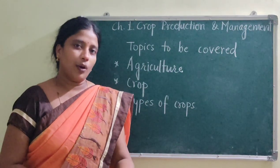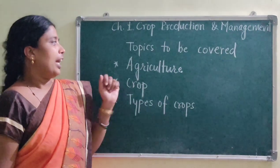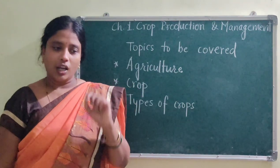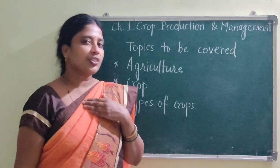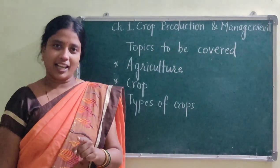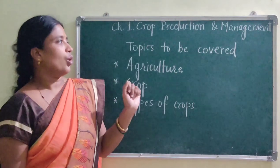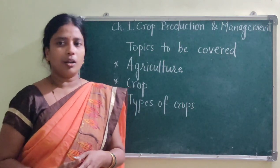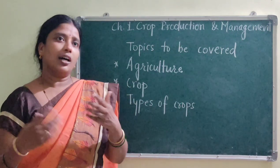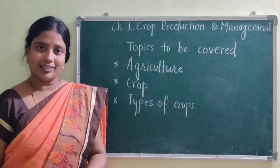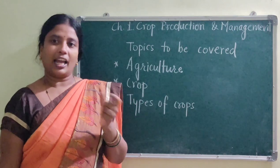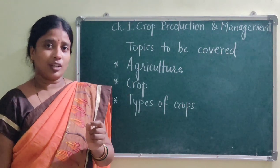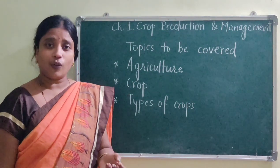For all these things, we depend upon plants and animals. So as we depend on them for so many things, it is our utmost responsibility to take care of these plants and animals. You might have seen poultry farms where we take care of hens so that we get eggs and meat from them. Similarly, people take care of honeybees for honey and silkworms for silk. These are all examples of rearing of animals.